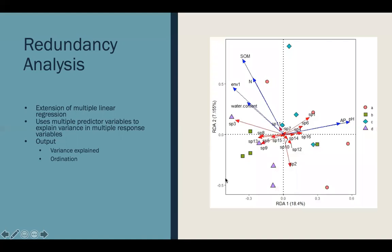Additionally, depending on what method of redundancy analysis you are following, one of the outputs of RDA can be an ordination where you have your vectors for both your predictor and response variables in an ordination space.